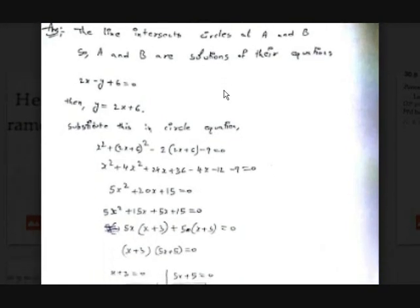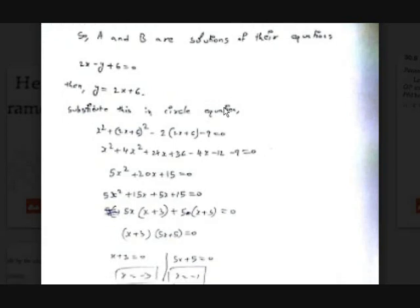First we have the equation 2x minus y plus 6 equals 0. We can use the substitution method. There are many ways — elimination or substitution. In the substitution method we substitute the expression for one variable. Now substitute y equals 2x plus 6, which we derived from the equation of the straight line, into the equation of the circle. Then we get x² plus y², substituting 2x plus 6.